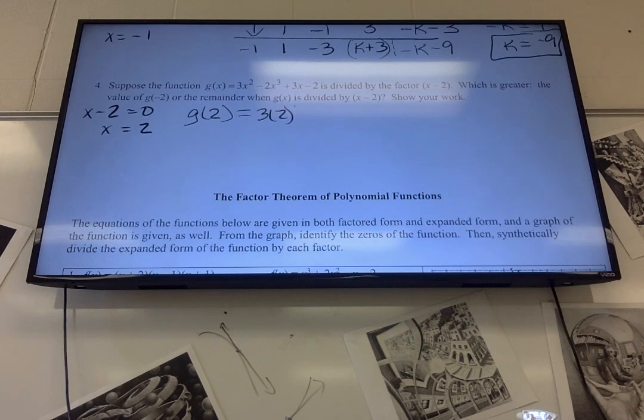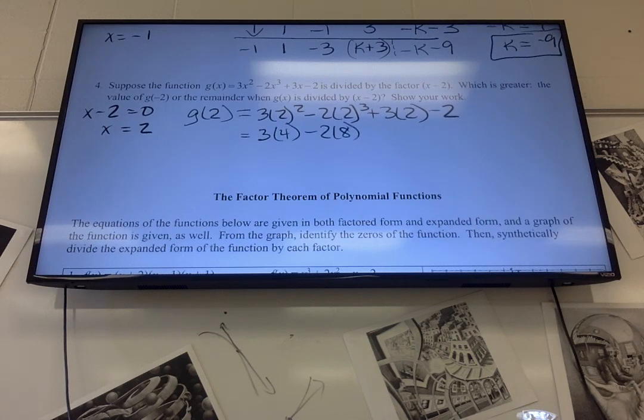So that's 3 times 2 squared, minus 2 times 2 cubed, plus 3 times 2, minus 2. So that's 3 times 4, minus 2 times 8, plus 6 minus 2. 12 minus 16 is negative 4. Negative 4 plus 6 is 2, and 2 minus 2 is 0. So g of 2 is 0. So the remainder, if I divide by x minus 2 is 0.